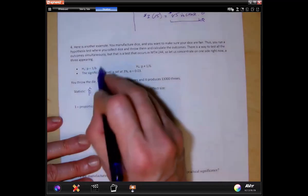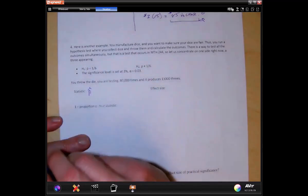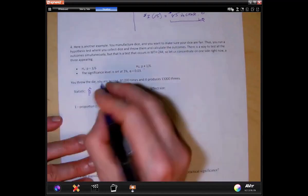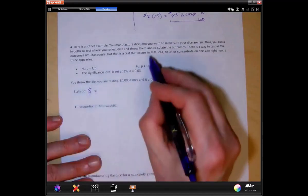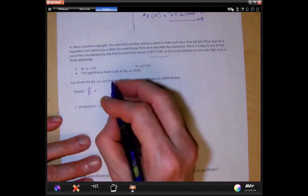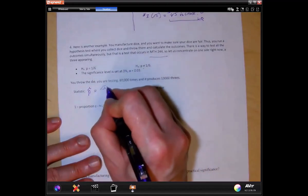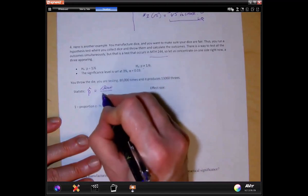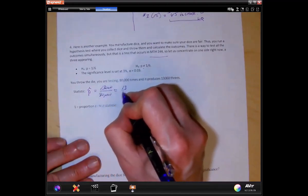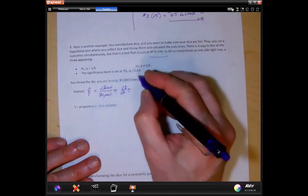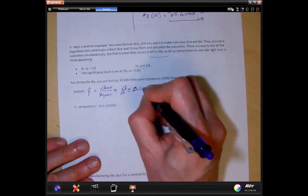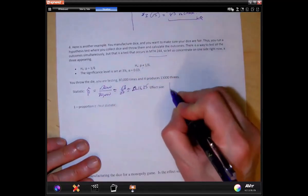The null hypothesis is finding out if this die will come out to the 1/6 that it's supposed to be. The alternative will be that somehow the die is not coming out to this 1/6 that it's supposed to do. So we've got 13,000 over 80,000. That's approximately 0.1625. That's my effect size.